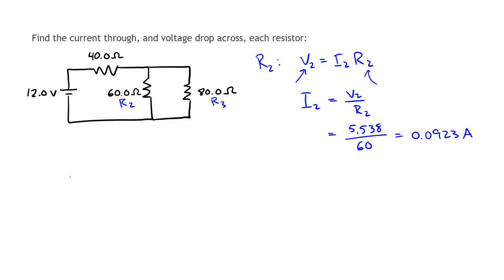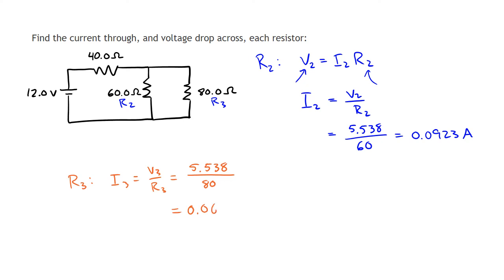I'll do the same for R3. I3 equals V3 over R3. The voltage drop across V3 is the same as V2, which is 5.538 volts, divided by R3 which is 80 ohms, giving a current of 0.0692 amps.